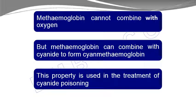Some methemoglobin is formed by normal physiological processes, but in very small amounts. RBCs have enzymes — methemoglobin reductase and glutathione — that immediately reduce any methemoglobin formed back to hemoglobin. Unlike oxyhemoglobin and carboxyhemoglobin, methemoglobin cannot bind oxygen, but it can bind cyanide to form cyanomethemoglobin. This property can be used therapeutically to treat cyanide poisoning.